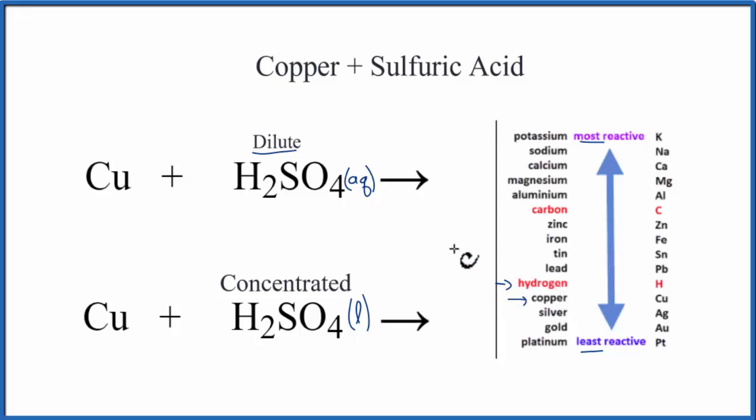Copper is below hydrogen, so copper is not going to be able to come in and replace the hydrogen. It's just not active enough. Because of that, there won't be any reaction when we mix copper with dilute sulfuric acid.